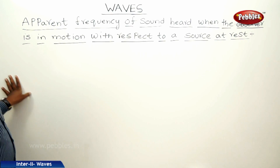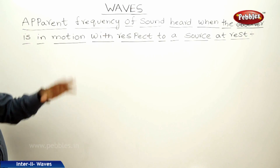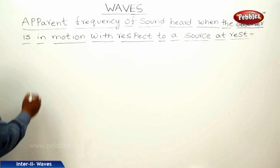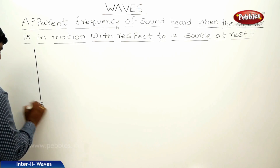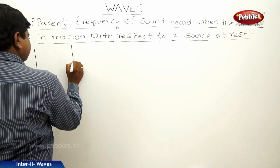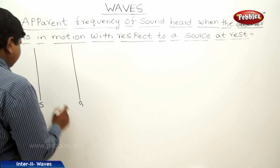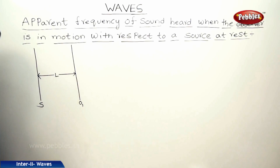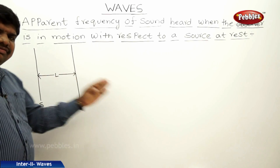The second case in the Doppler effect is the apparent frequency of sound heard when the observer is in motion with respect to a source at rest. This is exactly the opposite case to the first one — the source is at rest. An observer is at a position O1, initially at a distance L, and is moving away from the source.